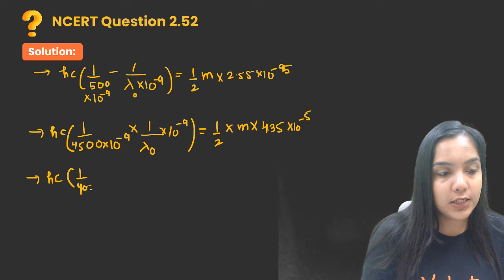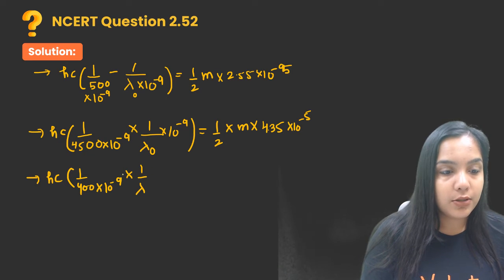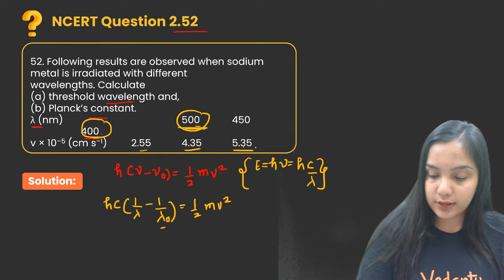Similarly for the last one where it has been given 400 into 10 raised to power minus 9, lambda naught into 10 raised to power minus 9 equal to half m, what is the value of v given? 5.35 into 10 raised to power minus 5.